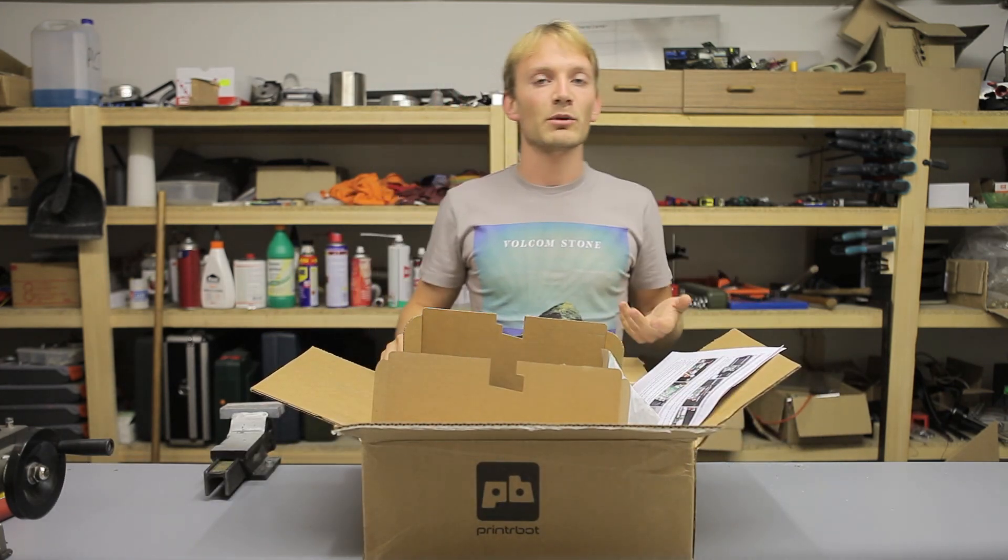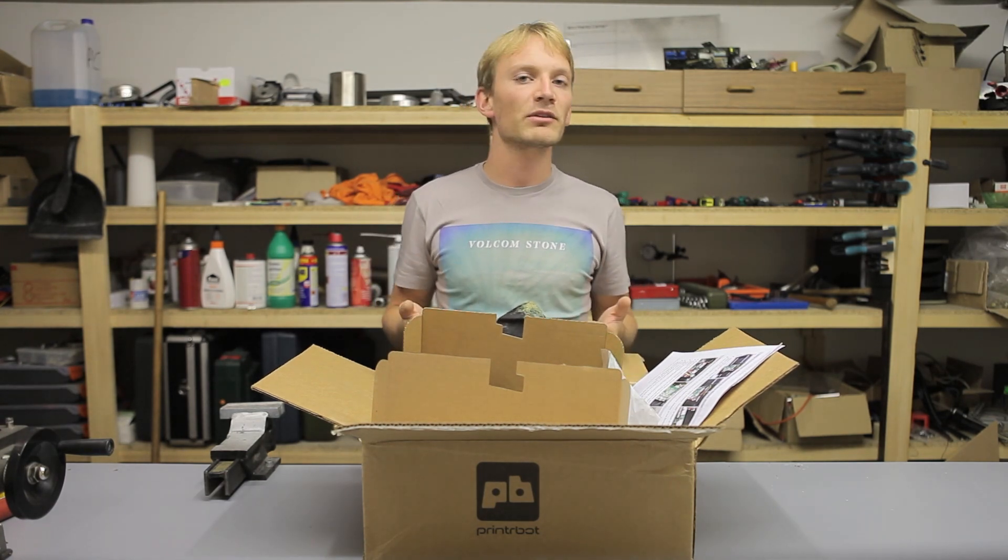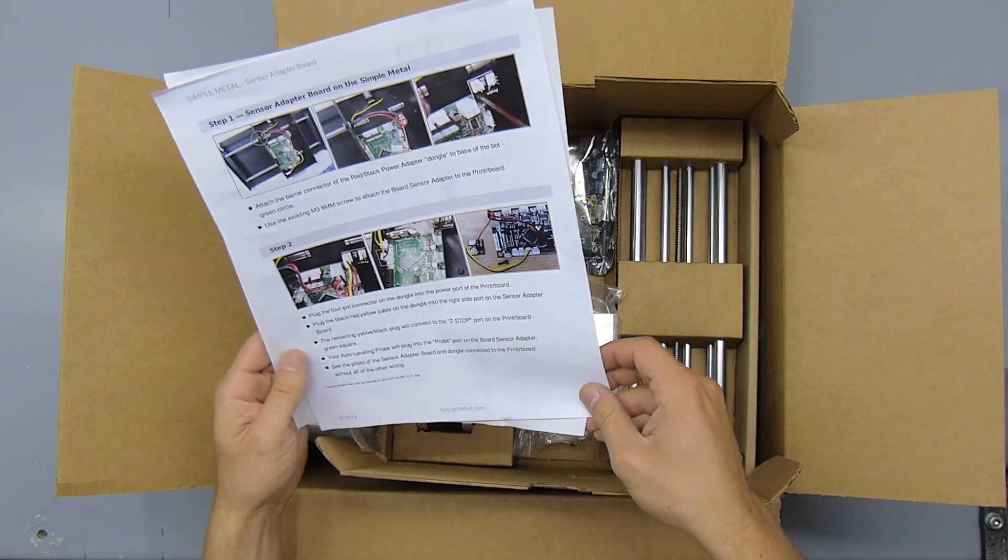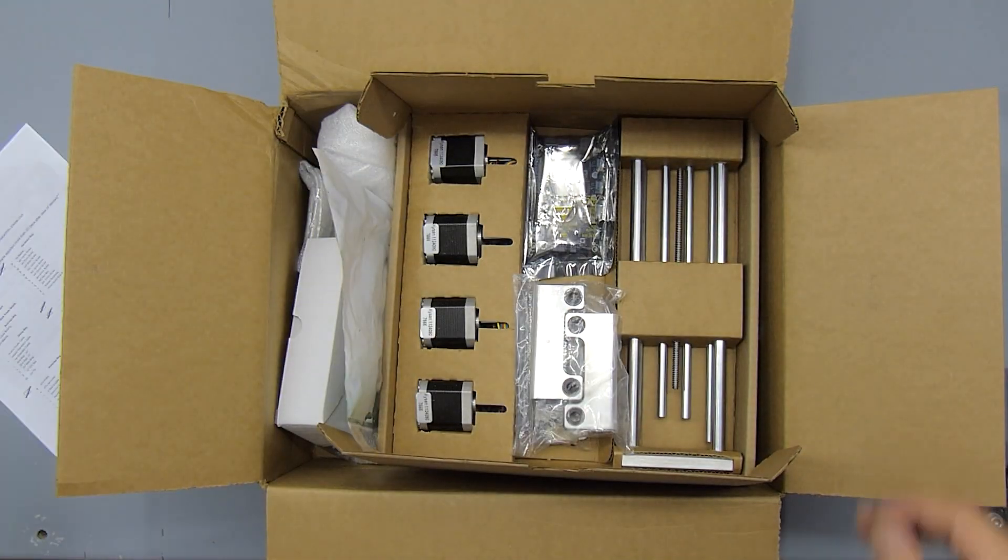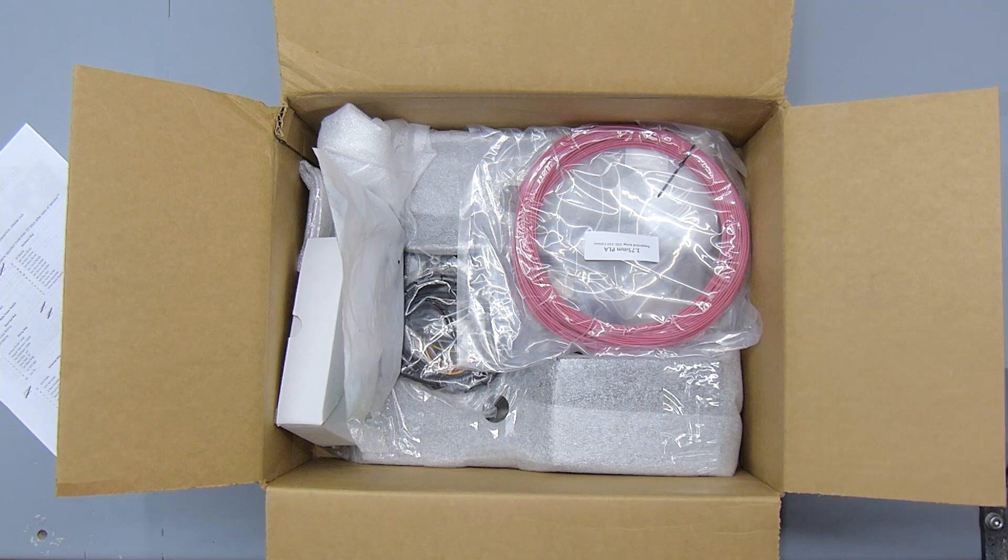This is the Printrbot Simple Metal Kit's box. It's a good bit smaller than the assembled version. We've got a help sheet for the Zanser adapter board and a packing list. We already got the good stuff here, so let's get that aside.